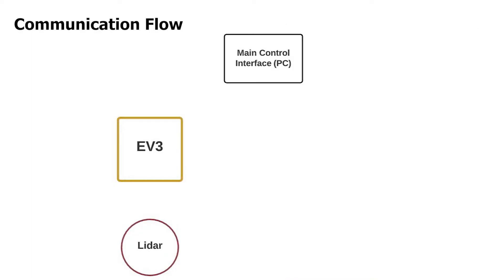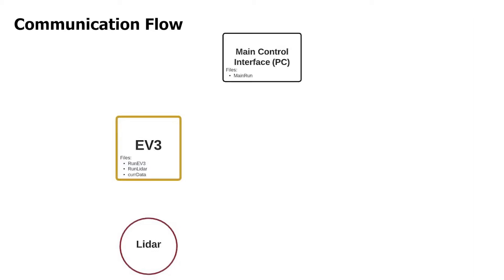But how does this all work? There are three primary components within this entire system: the main control interface — in this case my PC running the main program — the EV3, and the LiDAR. My PC contains the main running program, and the EV3 contains two primary scripts that my PC prompts to run: the first, run EV3, which controls the motion of the EV3, and the second, run LiDAR, which contains all the communication protocols for the LiDAR.